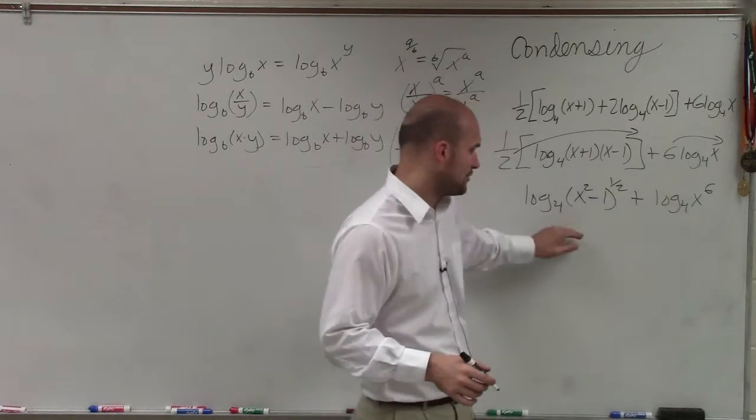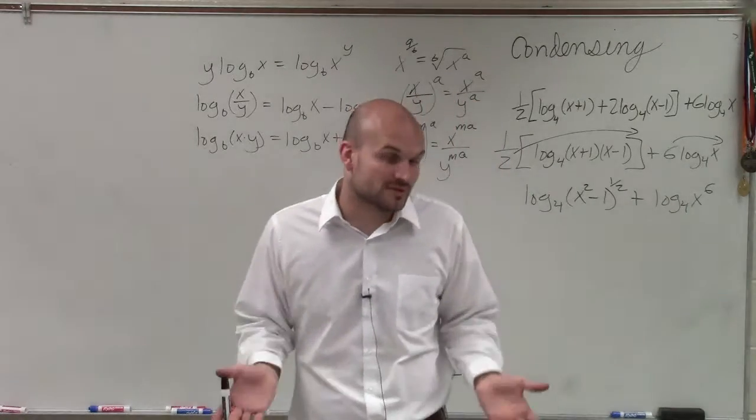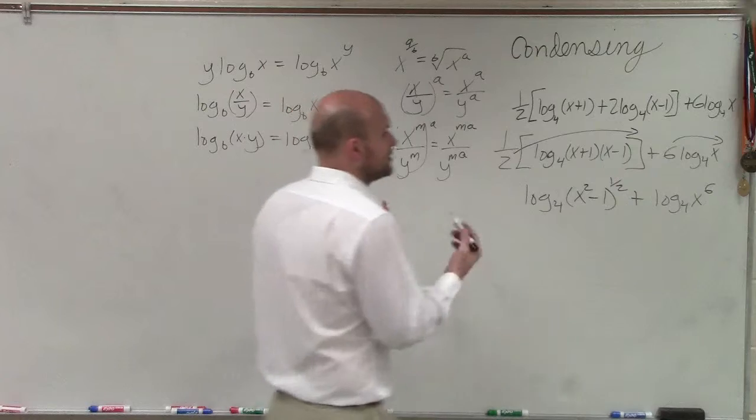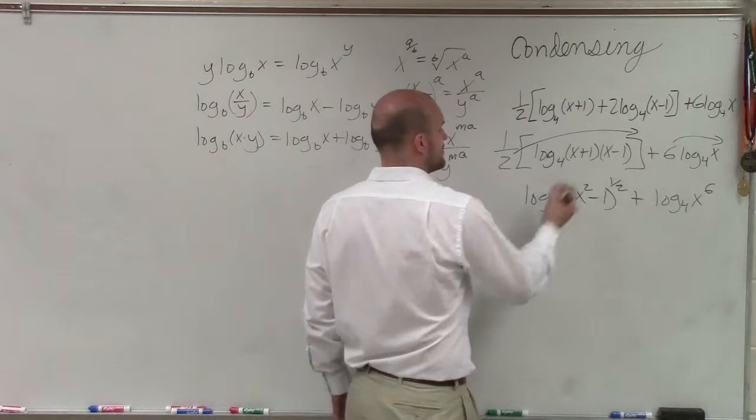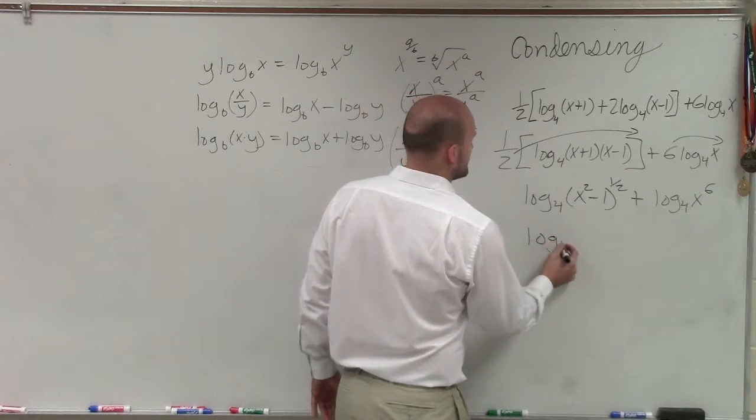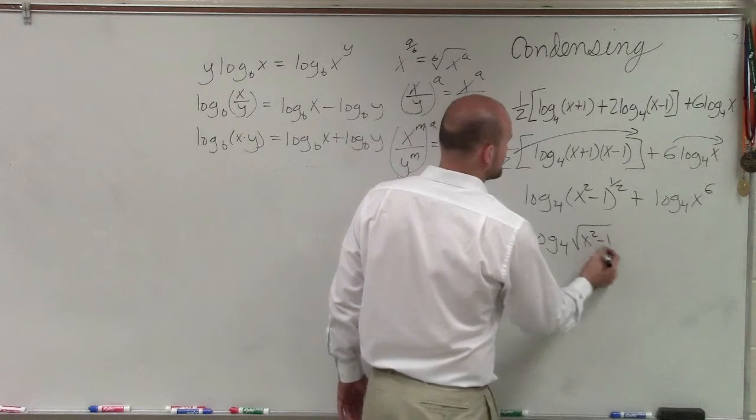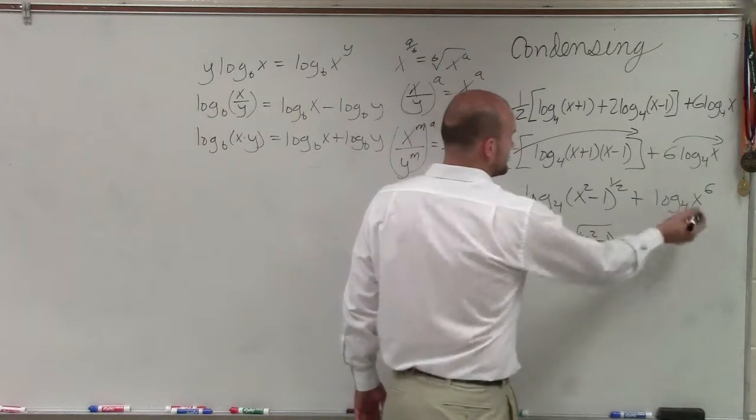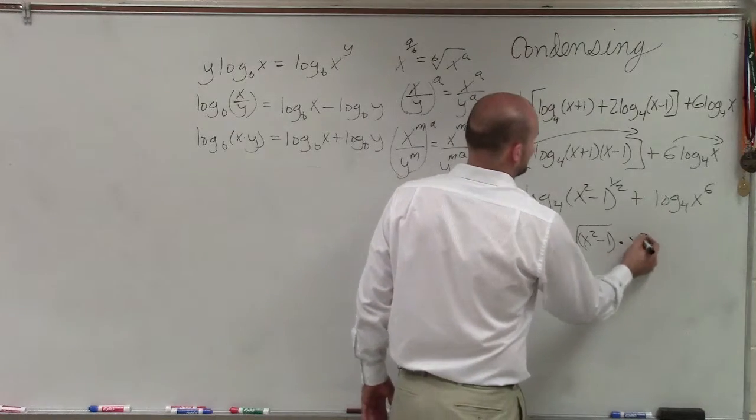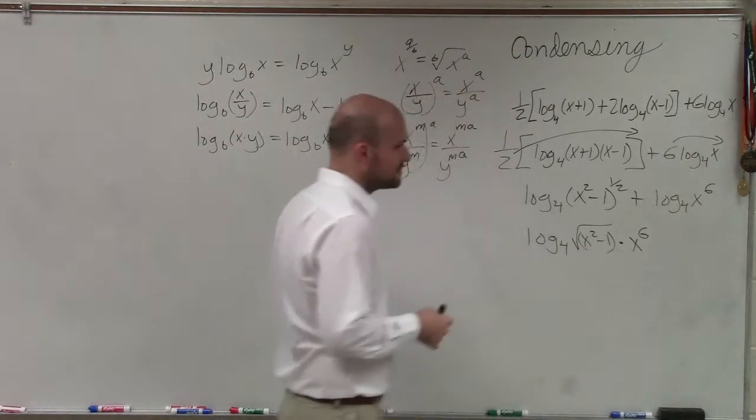You can see here, now I have two logarithms and I'm dealing with the sum of the two logarithms. So I can rewrite that as the product. But before I do that, I'm going to rewrite that as 1½. So that'd be log base 4 of the square root of x squared minus 1, times x to the 6th, which is outside of the square root.